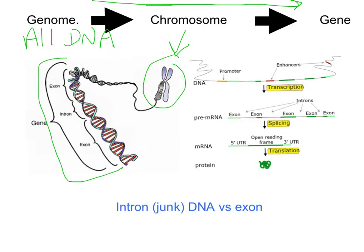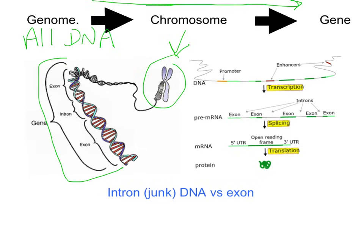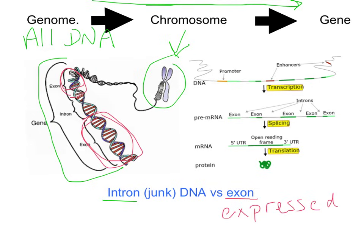In a gene we have introns and exons. Introns are called the junk DNA — they are not expressed. The exons are what is expressed; associate 'EX' with expressed. So the exon portion of the gene, for instance in a gene for hair color, is producing proteins that make your hair look brown, while the intron here is not producing anything. Introns are not expressed; exons are expressed. We'll see more of this when we do protein synthesis.